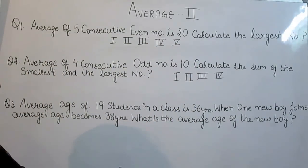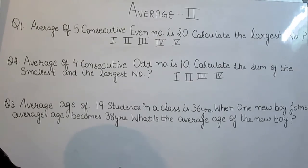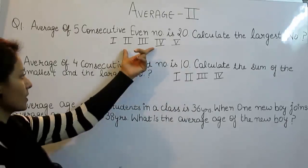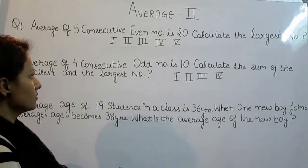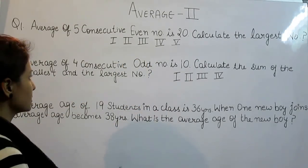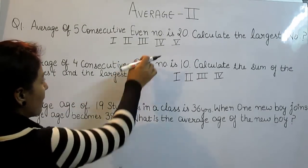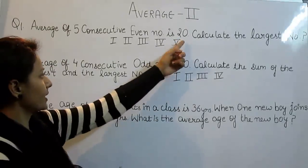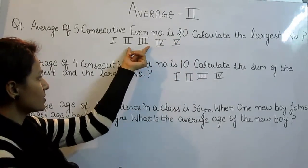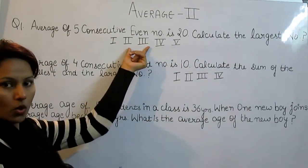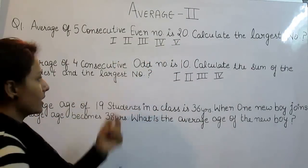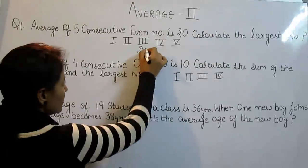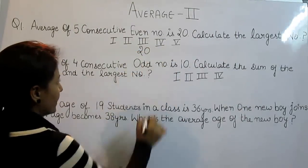Average of 5 consecutive even numbers. The average which is given is 20. The average is also always the middle number, and that middle number is given as 20.